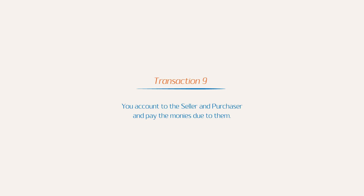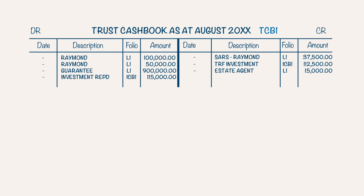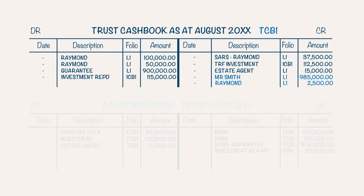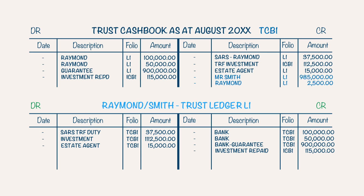Transaction 9: You account to the seller and purchaser and pay the monies due to them. You credit the trust cash book with the amounts paid. Payment to the seller Mr. Smith: R1,000,000 minus R15,000 equals R985,000. Payment to the purchaser Raymond: R2,500 for the interest from investing the money. You debit the trust ledger account for Raymond/Smith with the same amounts: R985,000 to Mr. Smith and R2,500 to Raymond for the investment interest.